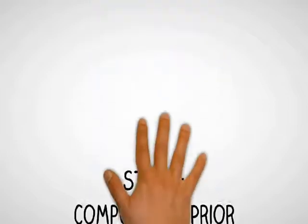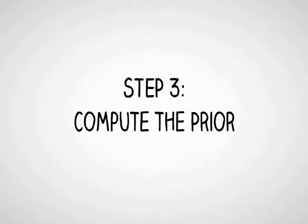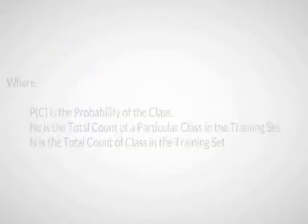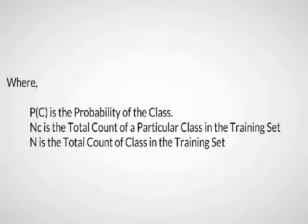Step 3: Compute the prior. Use the prior probability formula where P(C) is the probability of the class, NC is the total count of a particular class in the training set, and N is the total. Probability of positive is 0.4, probability of negative is 0.6.